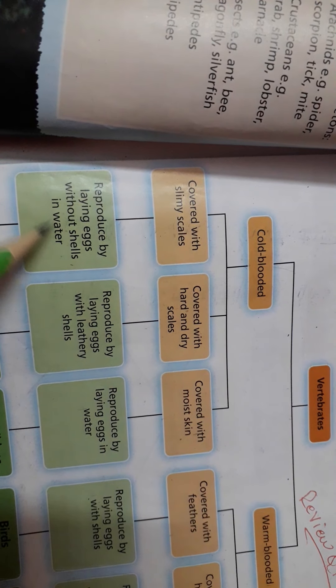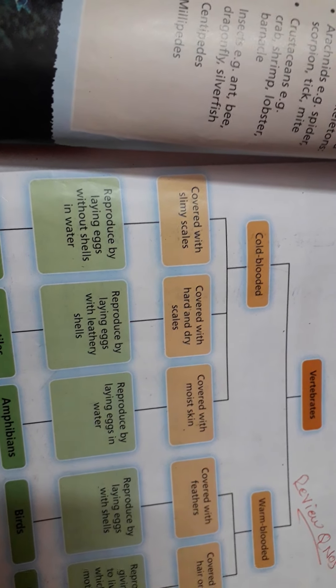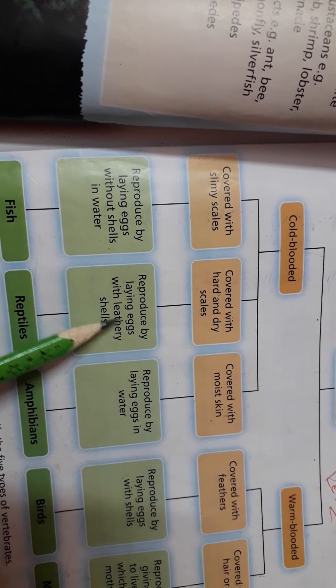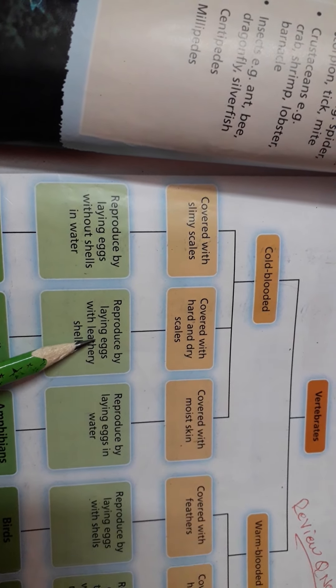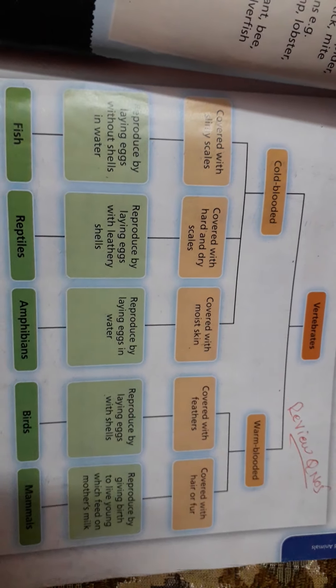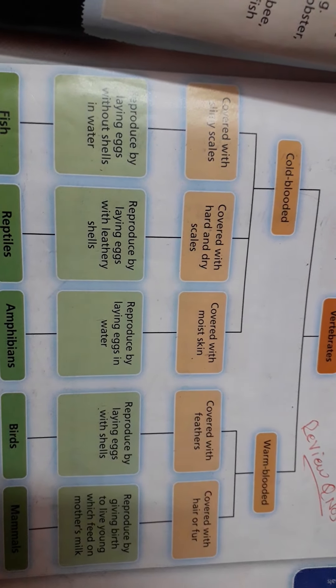Reproduction also differs among the three cold-blooded groups. The first group reproduces by laying eggs without shells in water — for example, fish. The second group reproduces by laying eggs with leathery shells — for example, reptiles such as lizard, crocodile, and snake. The third group reproduces by laying eggs in water — for example, amphibians such as frogs and toads.